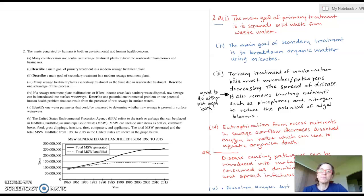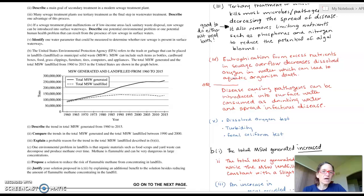Part four: if a sewage treatment plant malfunctions or if low income areas lack sanitary waste disposal, raw sewage can be introduced into surface waterways. Describe one potential environmental problem or one potential human health problem that can result from the presence of raw sewage in surface water. I gave you two different answers. You could talk about eutrophication from excess nutrients and sewage overflow that decreases dissolved oxygen in water, which can lead to aquatic organism death. Or you could talk about disease-causing pathogens introduced into surface water, which is consumed as drinking water and therefore spread infectious disease. Both would be ideal answers, not both together, but one or the other.